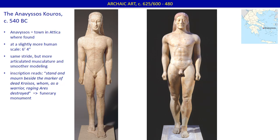The statue bears an inscription that reads: 'Stand and mourn beside the marker of dead Croesus, whom as a warrior raging Ares destroyed.' We are looking at a young man named Croesus — this is an idealized version rather than an exact portrait likeness. The inscription makes clear that this is Croesus' funerary monument, confirming the interpretation that these statues immortalized youths who died young. Remember, one of the primary roles of male citizens, particularly young men, was to serve as warriors and fight in battle. Croesus is beardless, as all Kouroi are. Since the ancient Greeks did not shave, beards were a marker of age.